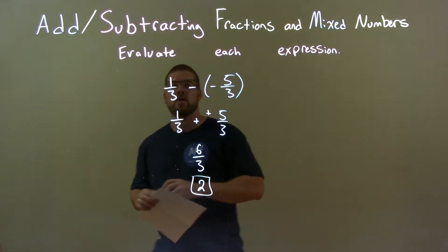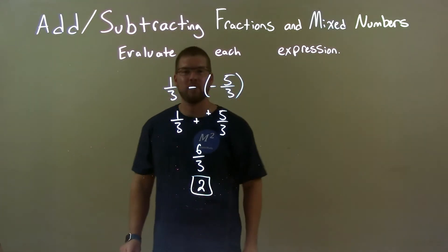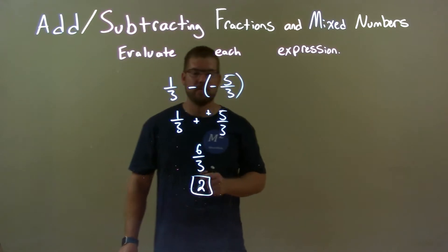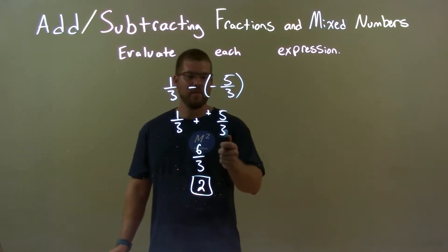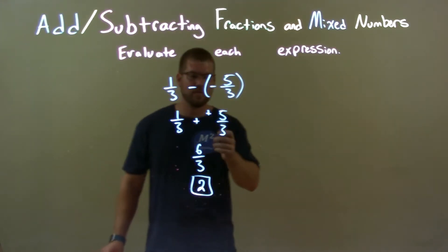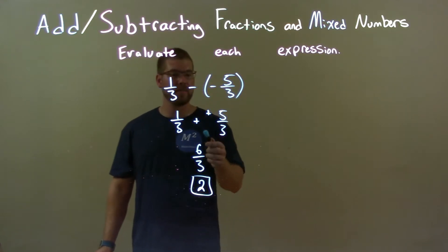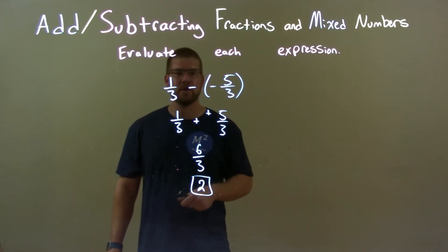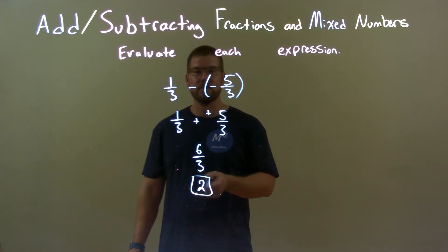So, quick recap. We were given one-third minus a negative five-thirds. Well, we know subtracting a negative is the same thing as adding a positive, so we did that. Then, since we have the same base, we just add the numerators. The numerators add up to be six, keeping the base of three, and six-thirds simplified to be two. So our final answer is just two.